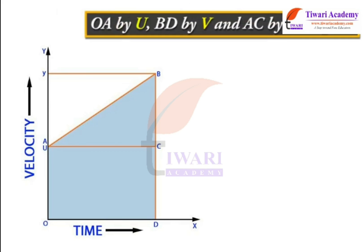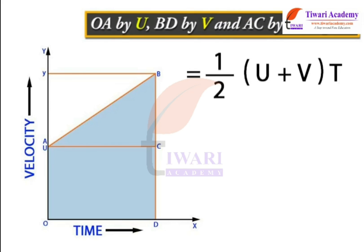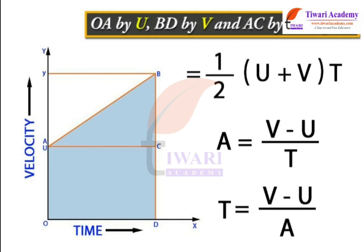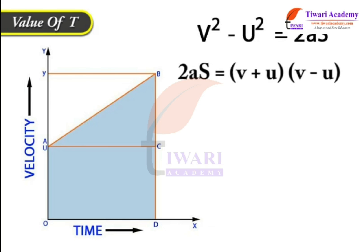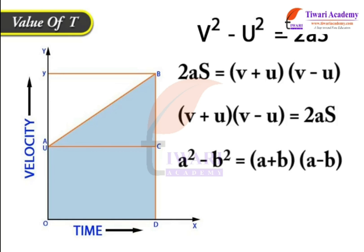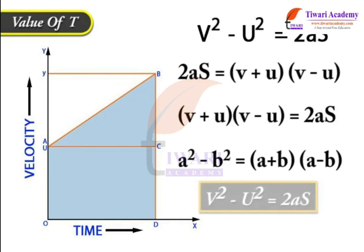Substituting OA = u, BD = v, and AC = t, we get S = ½(u + v) × t. We know that a = (v − u) / t, or t = (v − u) / a. Substituting the value of t, we get: ½(u + v) × (v − u) / a = S, which gives v² − u² = 2as. Using the identity a² − b² = (a + b)(a − b), we confirm v² − u² = 2as. This is the third equation of motion.